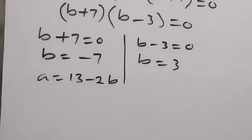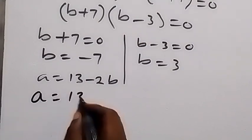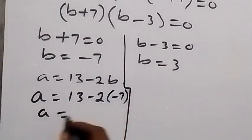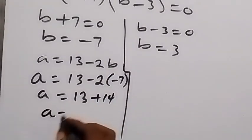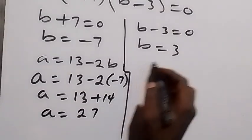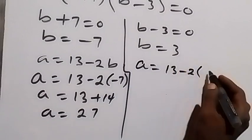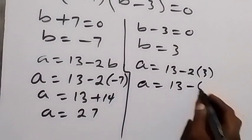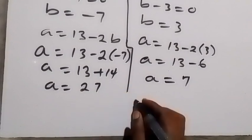When b is minus 7, a equals 13 minus 2 times minus 7, which is 13 plus 14 — because minus times minus gives plus — so a equals 27. On the other side, using the same formula when b is 3, a equals 13 minus 2 times 3, which is 13 minus 6, so a equals 7.